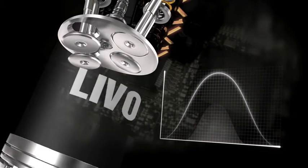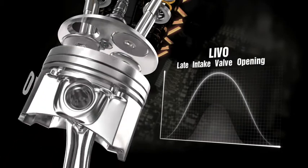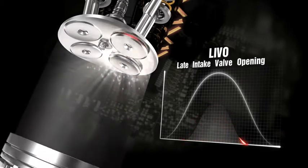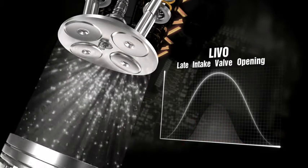At engine start-up and idling, LIVO, late intake valve opening, determines a higher speed air intake, thereby optimizing the mixture formed and its combustion.